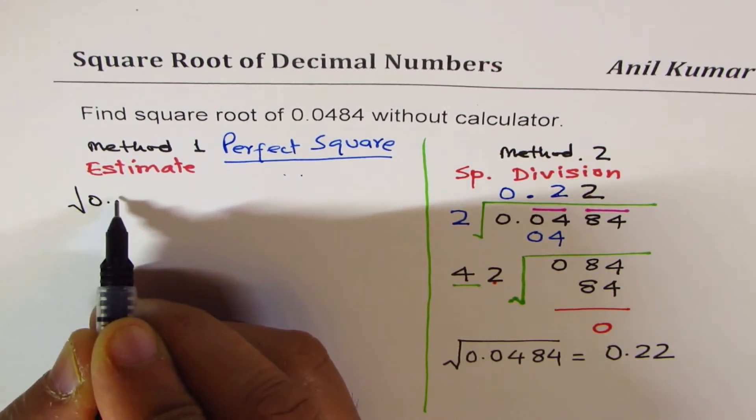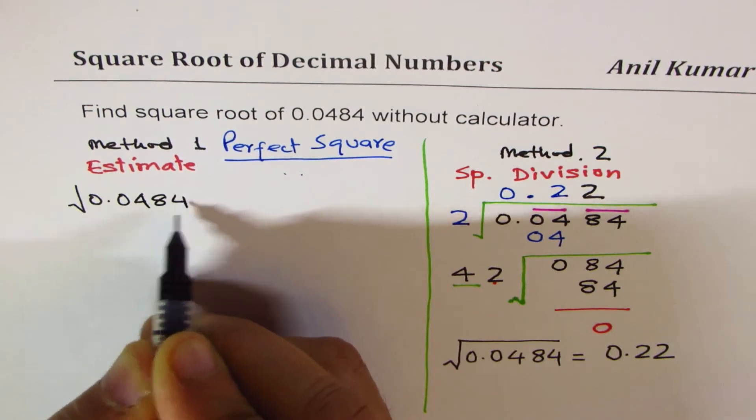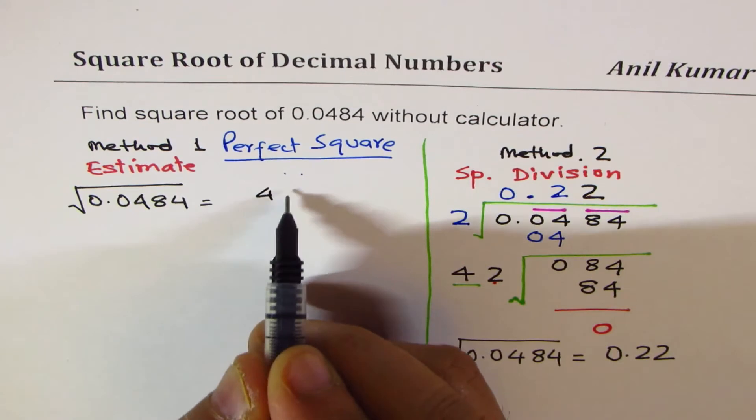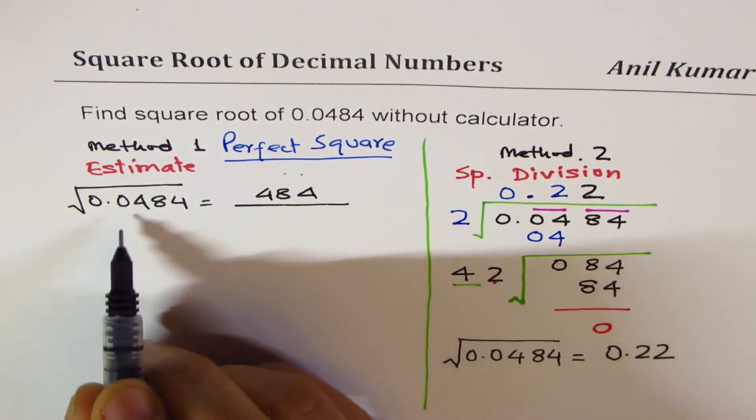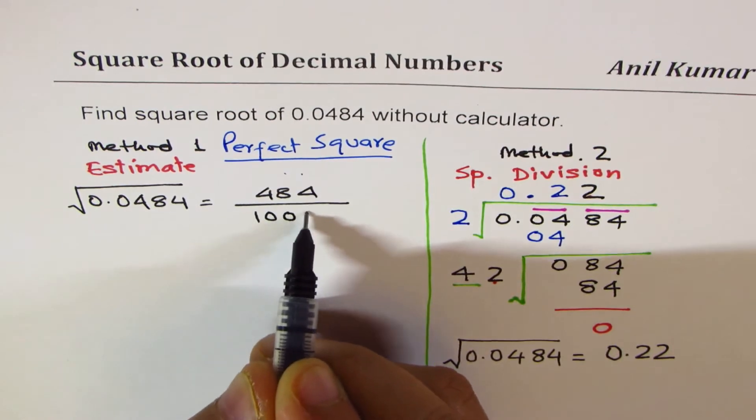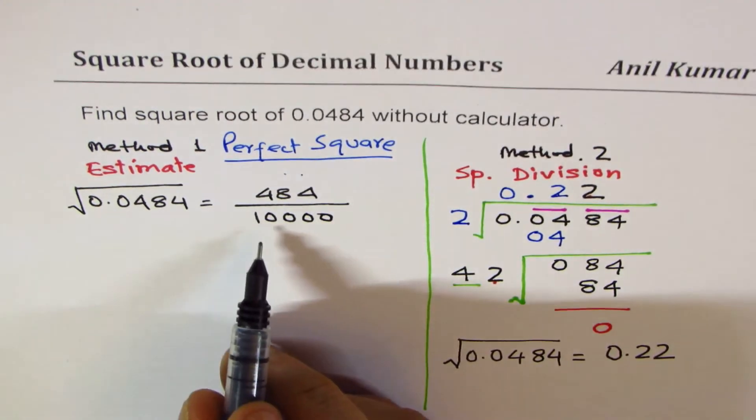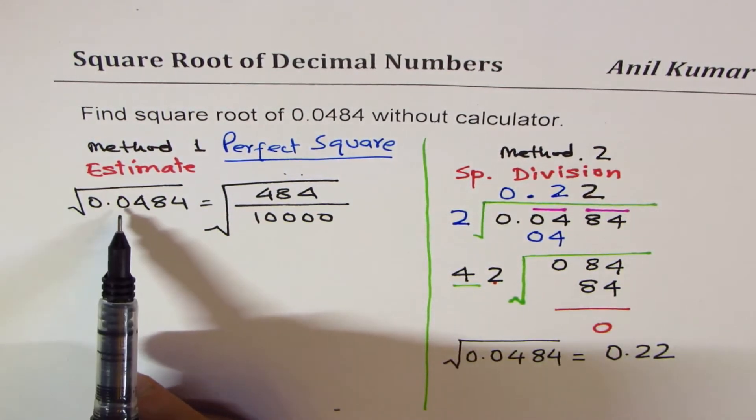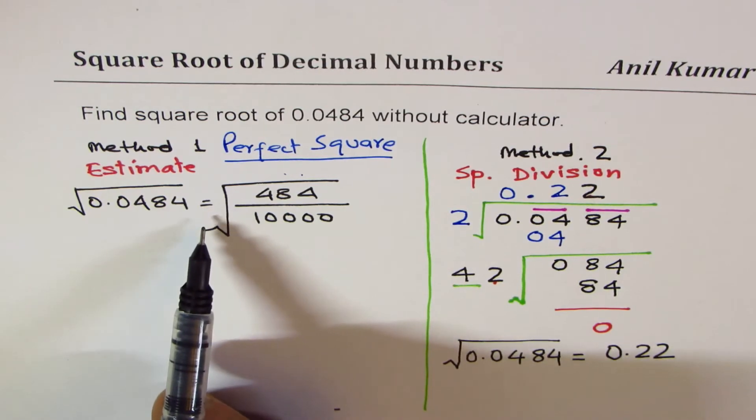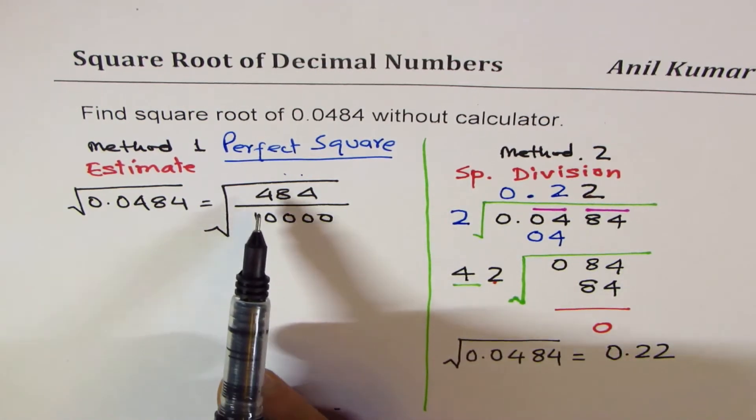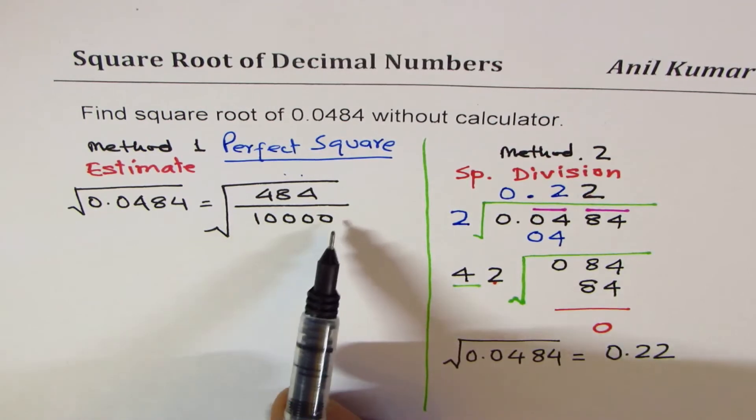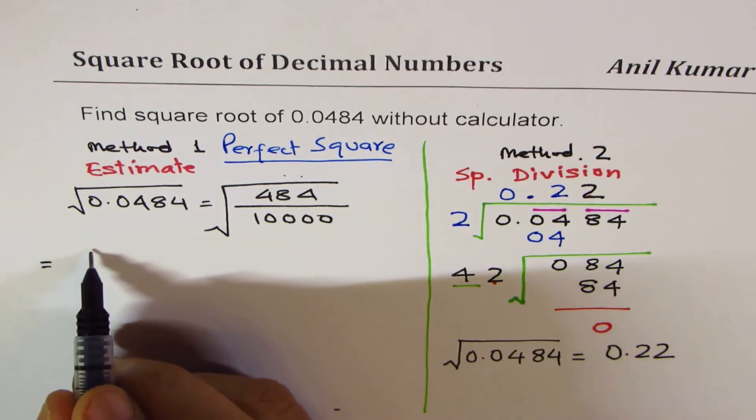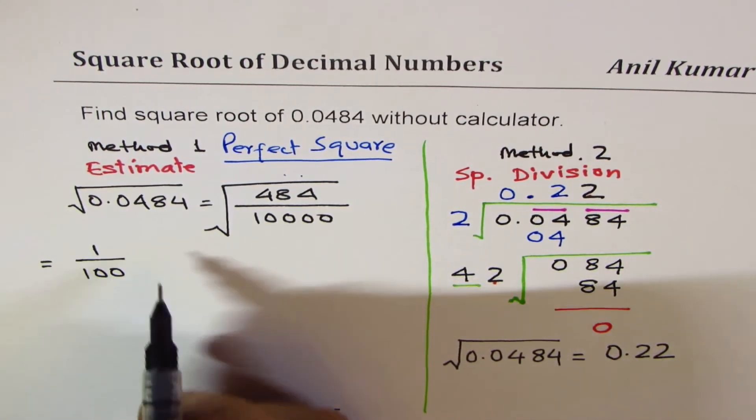We want square root of 0.0484. It could be written as 484 divided by 10,000. Finding square root of 0.0484 is the same as finding square root of 484 divided by 10,000. 10,000 has four zeros, so I could write this as 1 over 100.